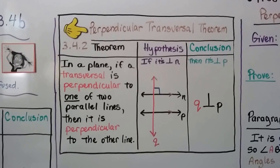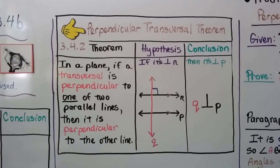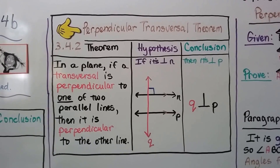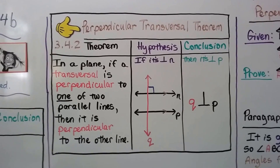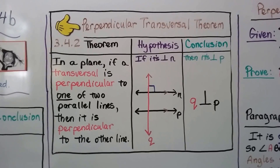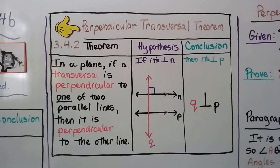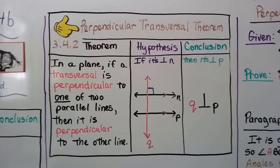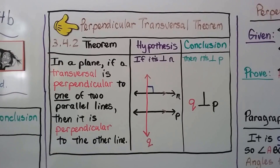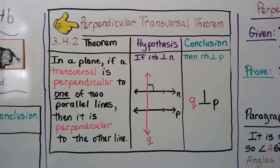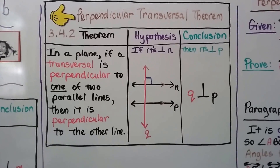Here's our Perpendicular Transversal Theorem, 3.4.2. The theorem says: in a plane, if a transversal is perpendicular to one of two parallel lines, then it is perpendicular to the other line. The hypothesis says if it's perpendicular to N, the conclusion is then it's perpendicular to P. So Q is perpendicular to N, so it must be perpendicular to P because N and P are parallel lines.